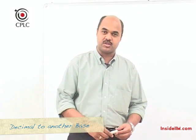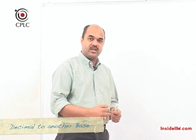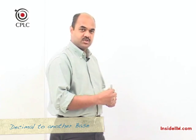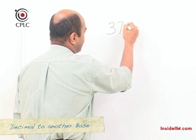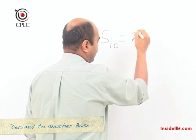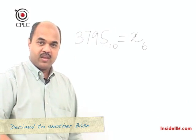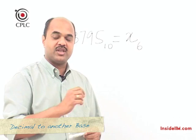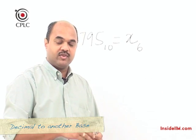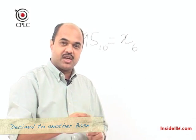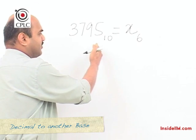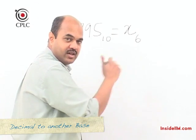We've just gone through an introduction to the base system and learned that base refers to the number of digits used by the number system. We've seen examples of the decimal and octal number systems. We will now learn how to actually convert a number from the decimal number system into some other number system. Suppose we start with the number 3795 in the decimal number system and want to convert it into base 6. Base 6 means 6 digits are used — from 0 to 5 — so the digit 6 or anything beyond that will never appear in that number.